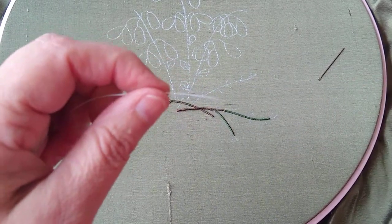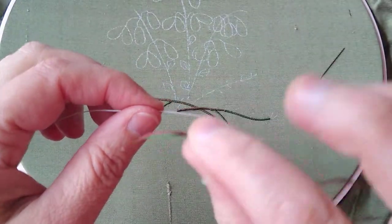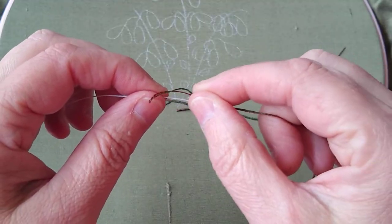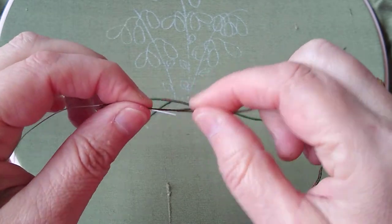We're going to make a wrapped stem using two different colored silks because we want it to be bi-color. We're just going to lay them along the length of wire.